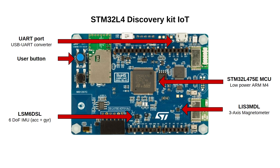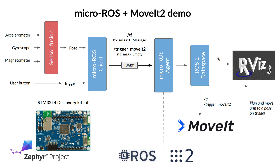These data are merged and packaged by means of the so-called sensor fusion, which allows encapsulating the relevant information regarding the body position and orientation in what is its quaternion attitude or pose.